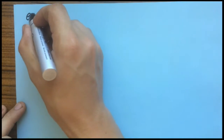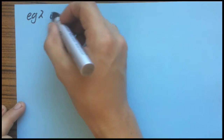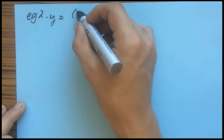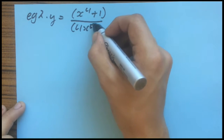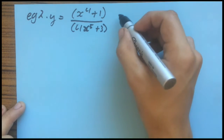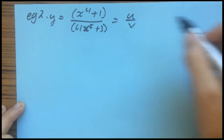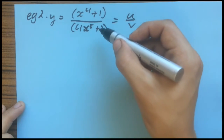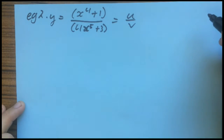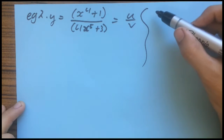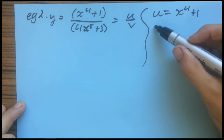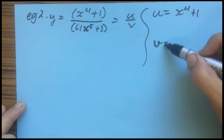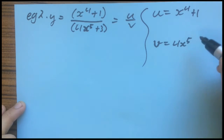Another example. Let's say Y equals X to the power of 4 plus 1, over 4X to the power of 5 plus 3. That looks a lot like U over V — a function over a function. So we use the Quotient Rule. Separate the page and rewrite U as X to the power of 4 plus 1, and V as 4X to the power of 5 plus 3.